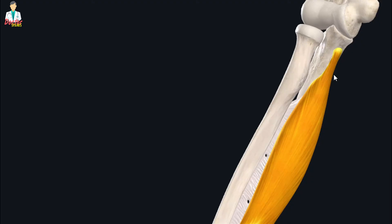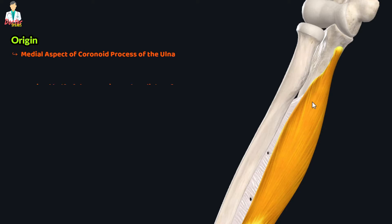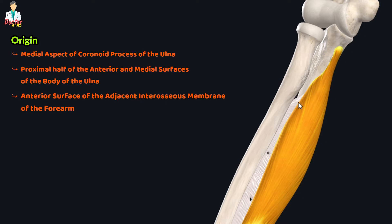We will start with the flexor digitorum profundus muscle. This muscle has a broad origin and it originates from the medial aspect of the coronoid process of the ulna, the proximal half of the anterior and medial surfaces of the body of the ulna, and the anterior surface of the adjacent interosseous membrane of the forearm.